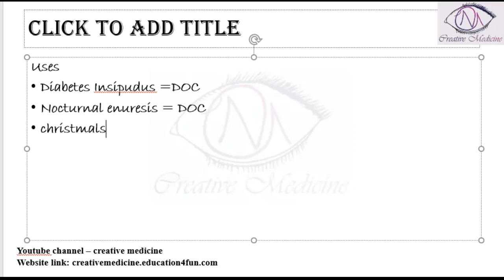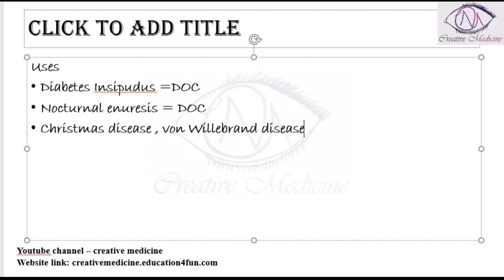Desmopressin can also be used in Christmas disease because it has an extra-renal V2-like or V3-like action. Through V3 receptor activation, it increases the production of Factor VIII and von Willebrand factor. In Christmas disease there is deficiency of Factor IX and Factor VIII, while in von Willebrand disease there is deficiency of von Willebrand factor. Desmopressin raises the levels of both Factor VIII and von Willebrand factor, aiding coagulation and making it useful in both diseases.